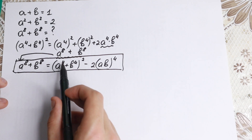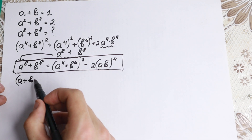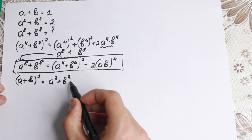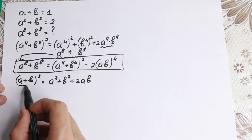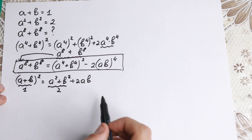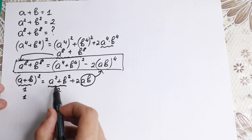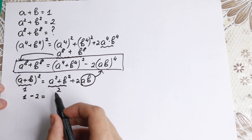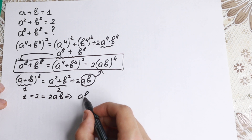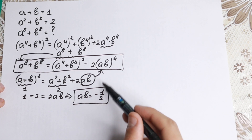We need ab to the fourth power, so let's find it step by step. First, I raise a plus b to the square: a squared plus b squared plus 2ab. We know a plus b equals 1 and a squared plus b squared equals 2. So 1 squared equals 1, bringing terms over: 1 minus 2 equals 2ab, giving minus 1 equals 2ab, so ab equals minus one half. We find ab equals minus one half.